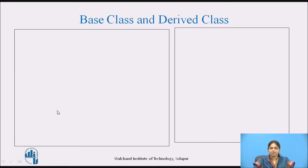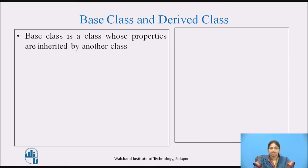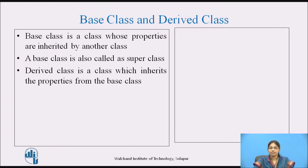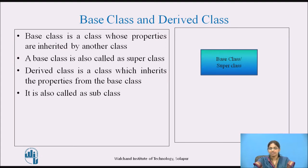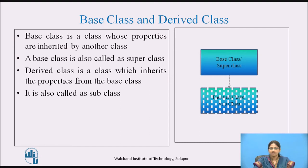Let us see what is meant by base class and derived class. The base class is a class whose properties are inherited by another class. A base class is also called a super class, and a derived class is a class which inherits the properties from the base class. The derived class is also called a subclass. Here it shows an example where the base class or super class has its properties inherited into the derived class, which is also called a subclass.